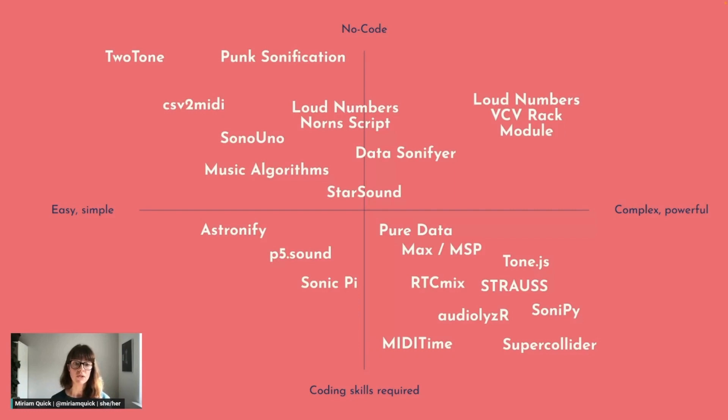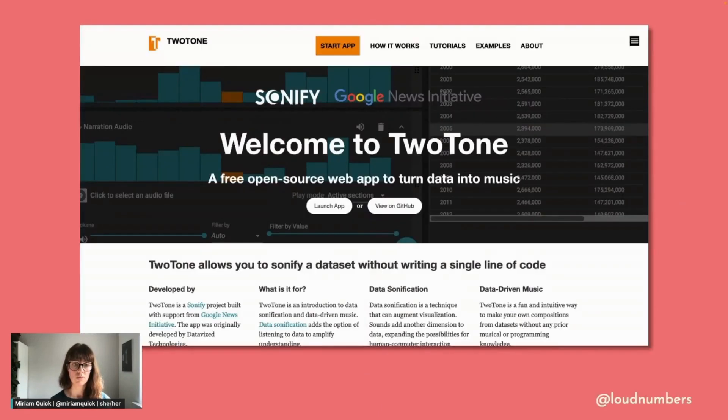In the lower right, you'll find many sonification tools that are quite complicated to use and require some coding knowledge, including Sonic Pi, Max MSP and SuperCollider. And then in the top left here, you've got the simplest tools like TwoTone. If you're an absolute beginner to working with sound, then TwoTone is a really good place to start. It's a web-based tool and you can easily upload a CSV or use one of the preloaded datasets to make a simple pitch-based sonification in about two minutes. It's free and it doesn't require any coding knowledge. And it's really great for getting to grips with the basics.